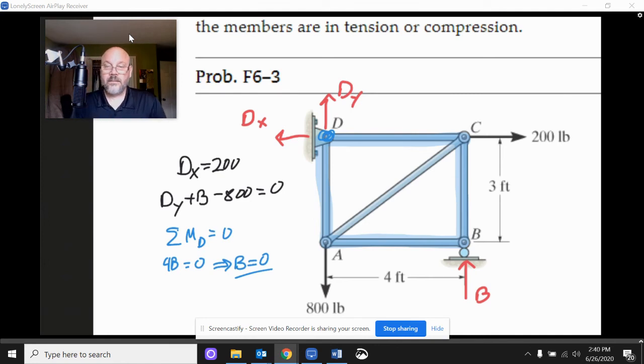B is zero. Okay. So we don't need B in this thing. So we've learned DX. We've learned B. And since B is zero, then that means that DY has to be 800.